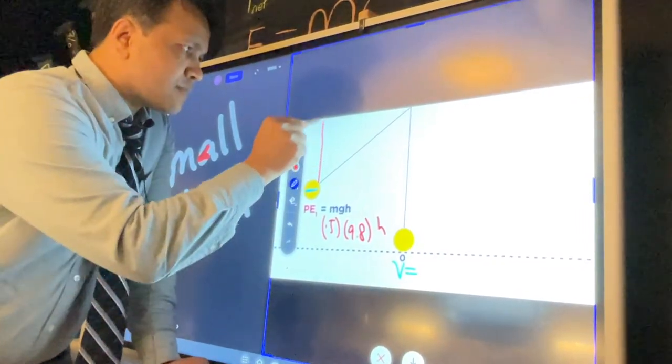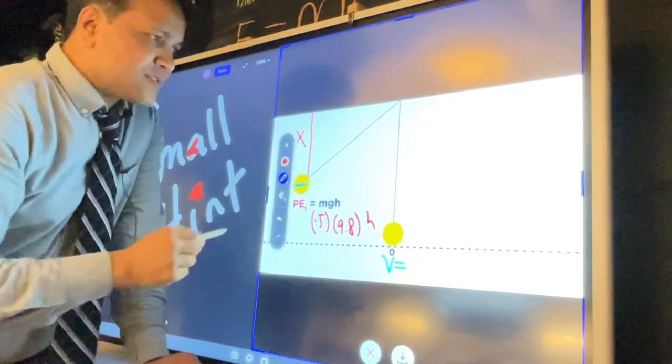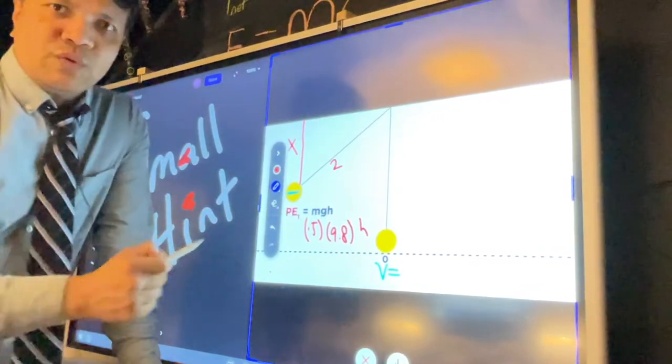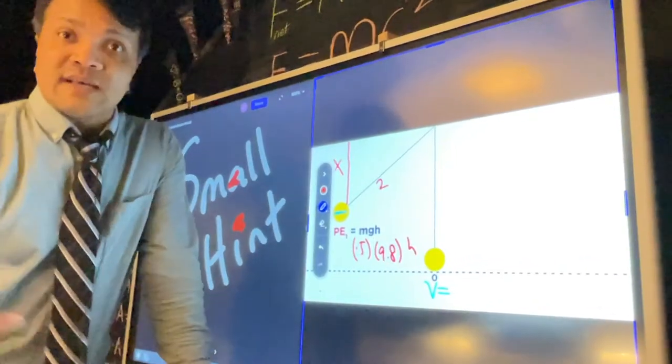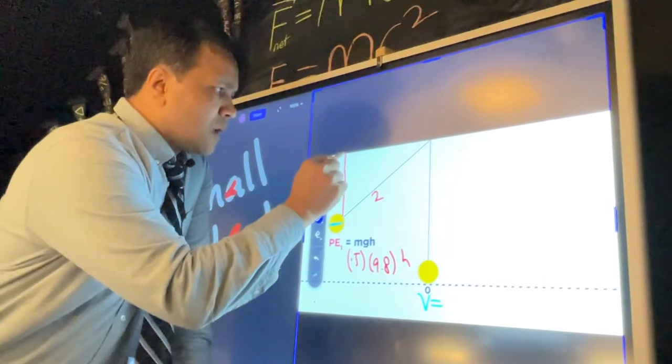This one is, let's call it x. This one we already know is 2 because the string is 2. Even if it's swinging, it's still 2. You don't lose the length of a string just because it's swinging.